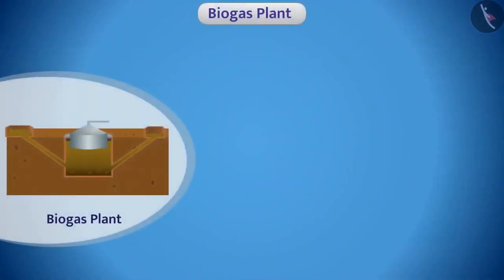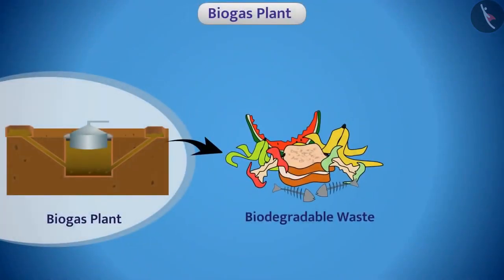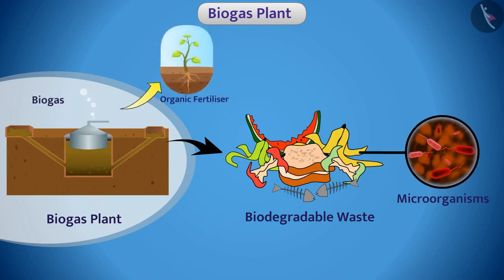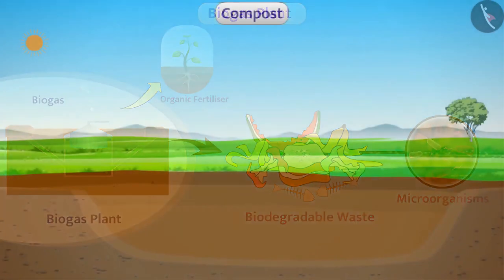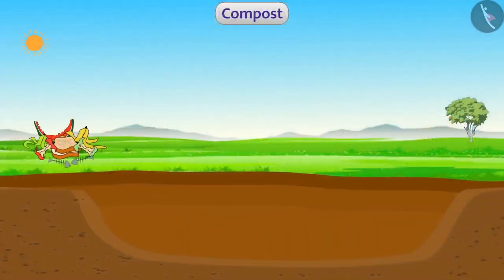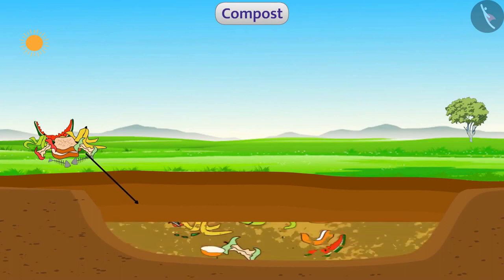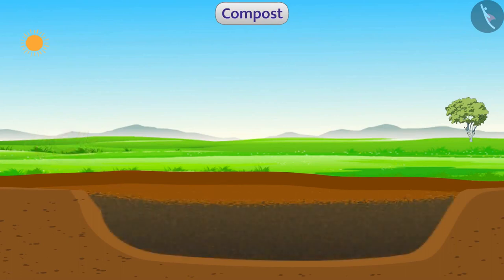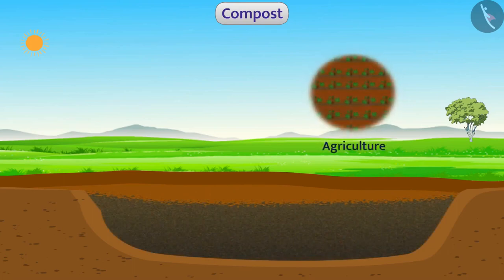In a biogas plant, with the help of microorganisms, biodegradable waste can be converted into biogas and organic fertilizer. Biodegradable waste can also be left for decomposition naturally in a deep pit, from which we can make compost that can be used in agriculture and as a compost in the garden.